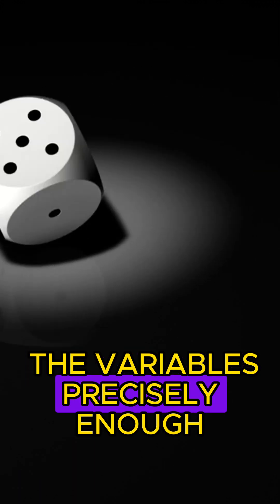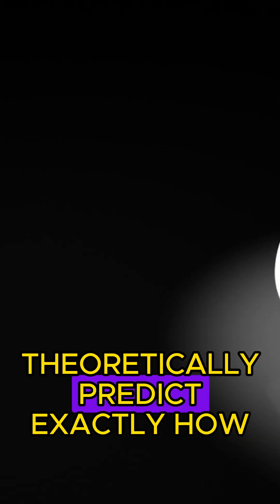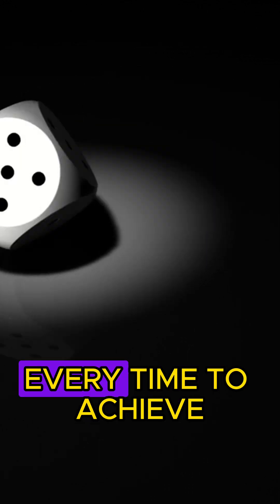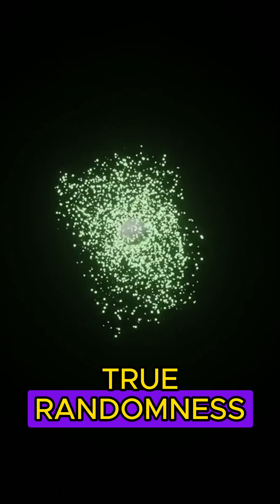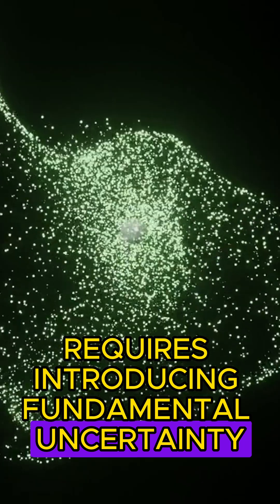If you knew all the variables precisely enough, you could theoretically predict exactly how the die would land every time. To achieve true randomness requires introducing fundamental uncertainty at the quantum level.